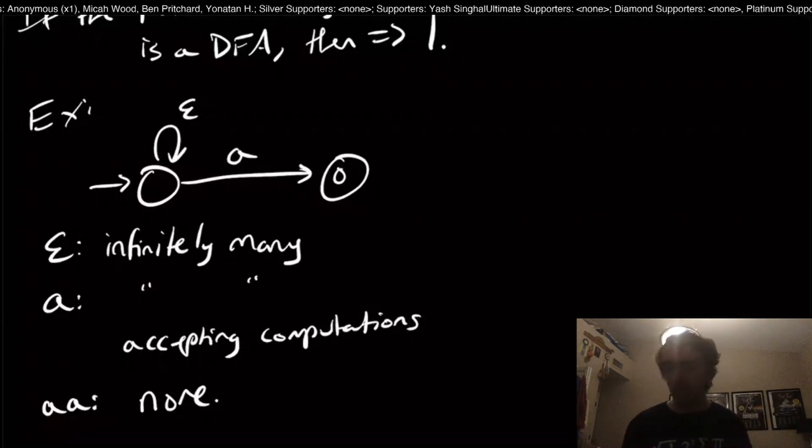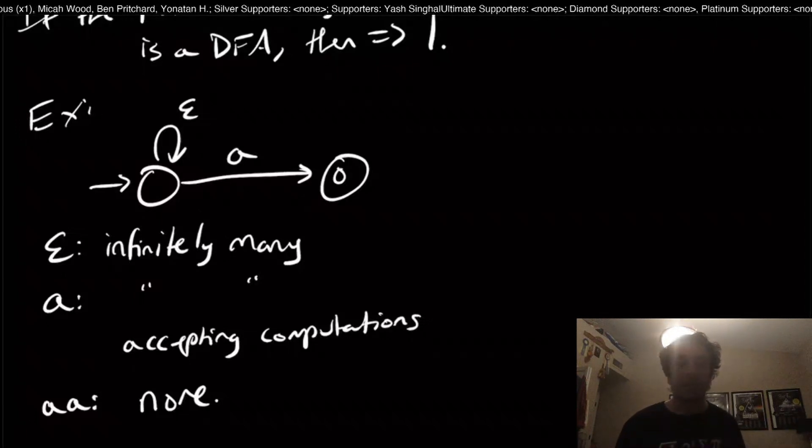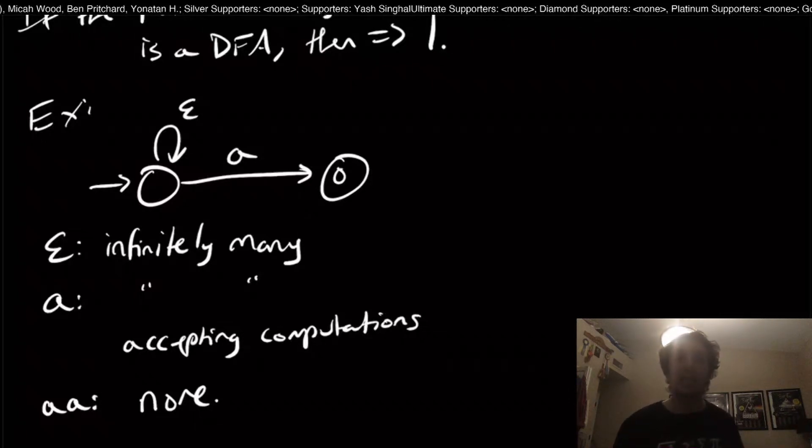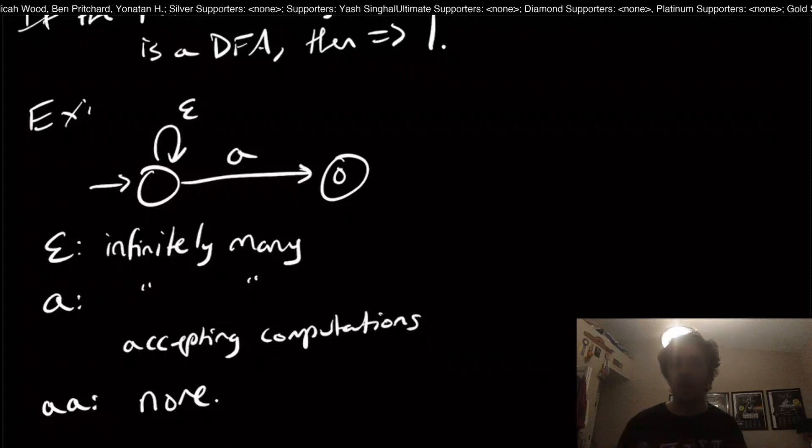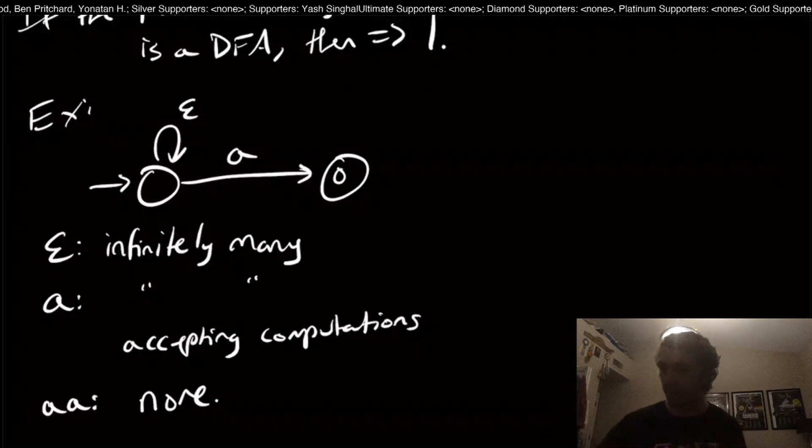What is quite interesting about NFAs is that we can get zero, one, or infinitely many, but can we do better? Can we get some finite number in the middle? Is it always zero, one, and infinity? Or can we get some number in the middle?